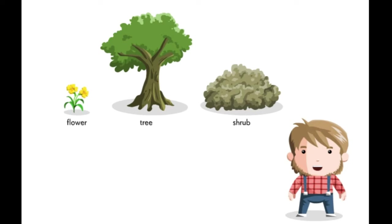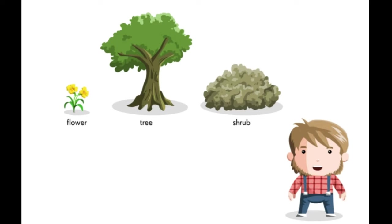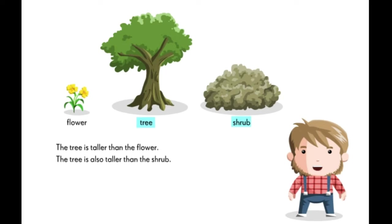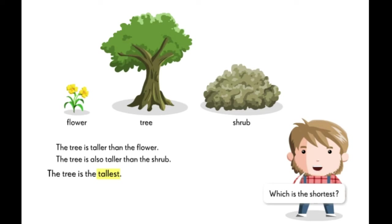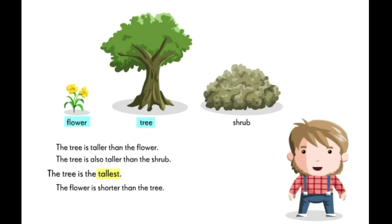Now we can compare two lengths by comparing them with a third length. Let's compare the height of these plants. Which is the tallest? The tree is taller than the flower. The tree is also taller than the shrub. So we say that the tree is the tallest. Which is the shortest? The flower is shorter than the tree. The flower is also shorter than the shrub. So the flower is the shortest.